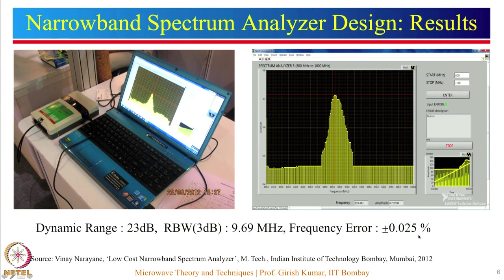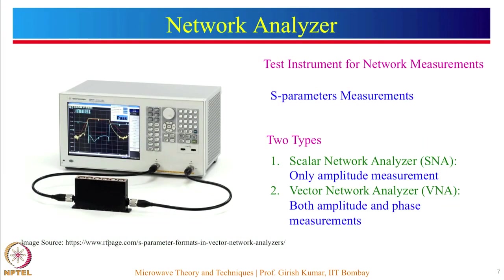A very accurate system has been developed, at least in the frequency domain, to have a functional spectrum analyzer. Moving next, we have a network analyzer system — a test instrument used for network measurements, which are S-parameter measurements. There are two types: scalar network analyzer (SNA) and vector network analyzer (VNA).